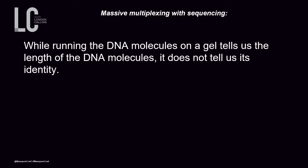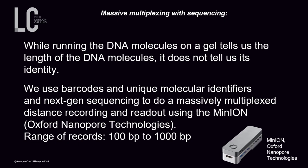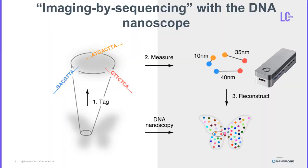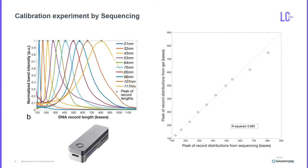While running the DNA records on a gel gives us the length, it certainly does not give us its identity. We hence use barcodes and do massively parallel next-gen sequencing using the MinION from Oxford Nanopore Technologies. Here, the records range from as short as 100 base pairs up to 1000 base pairs, which is unlike the long-range reads that the MinION nanopore sequencing is usually used for. Our imaging by sequencing via the DNA nanoscope works by first tagging targets with barcoded handles, sequencing the barcoded records with the MinION, and reconstructing a molecular resolution map. We repeated the calibration experiment by sequencing the records this time and got excellent correlation between the gel and the sequencing results.